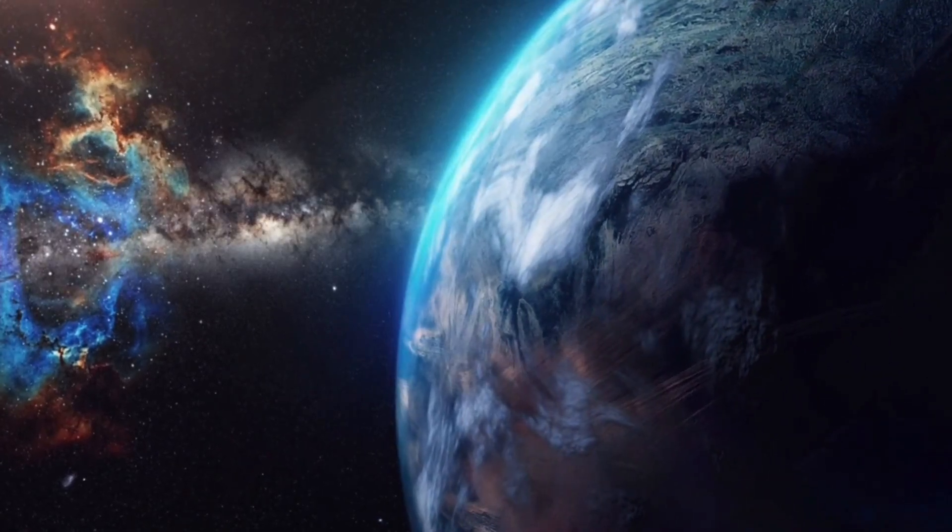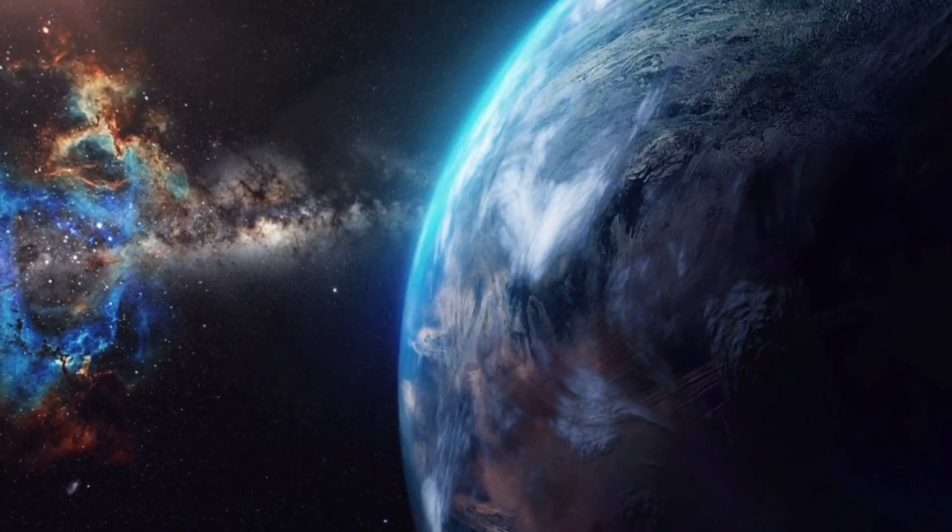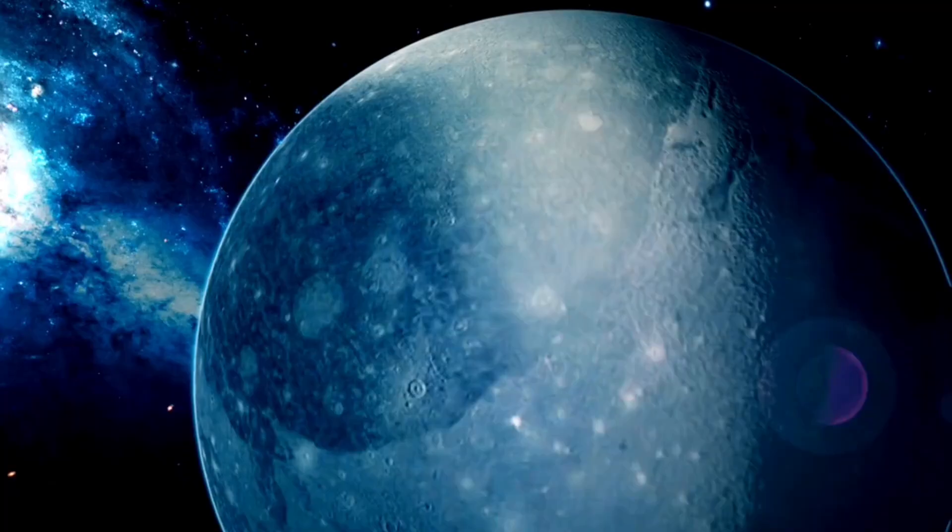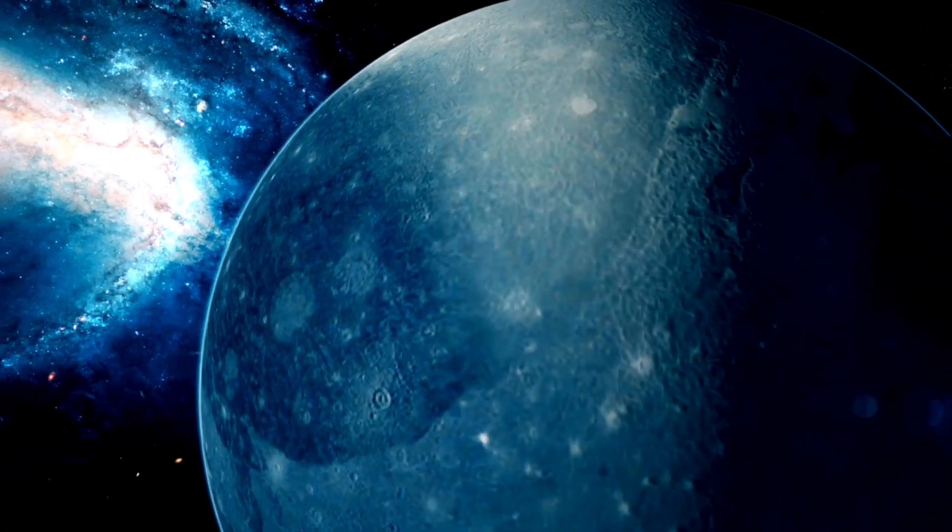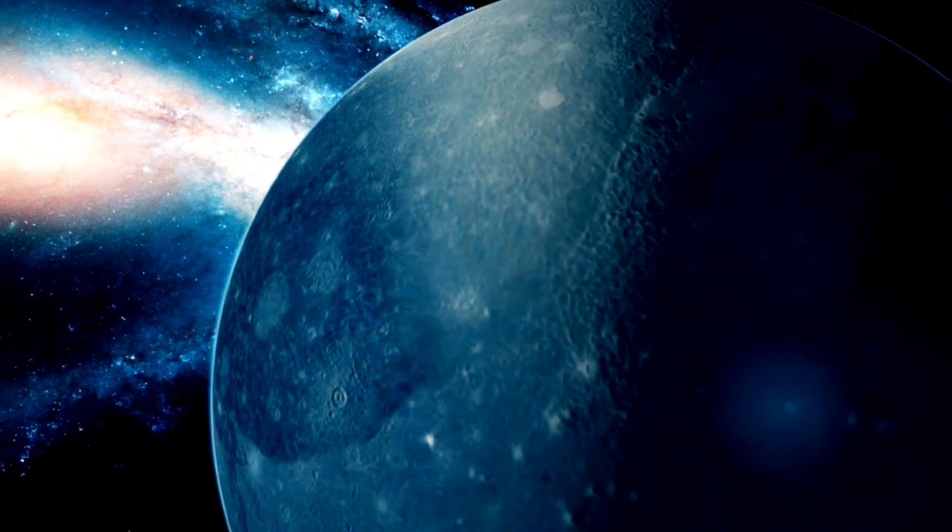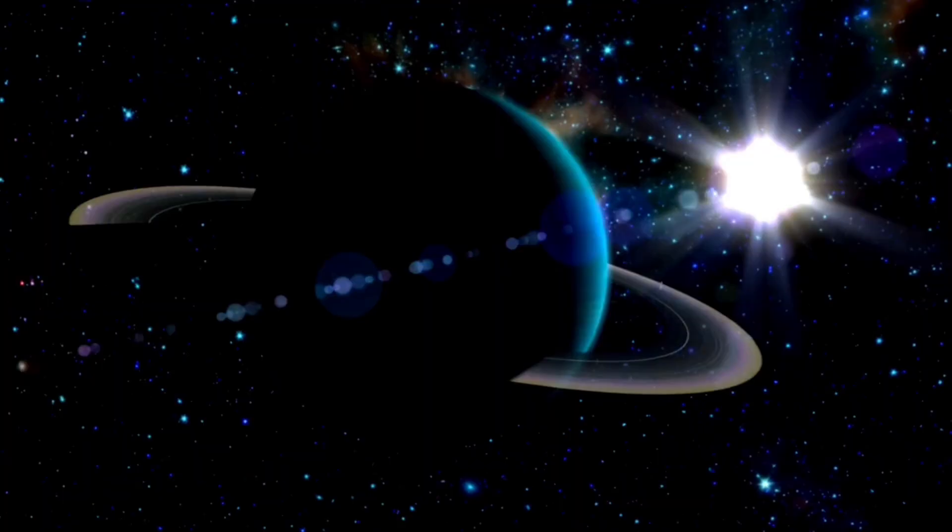For years, Proxima B has hovered just beyond the edge of certainty, a ghostly figure in the cosmic distance, orbiting our nearest stellar neighbor in the faint flickering light of a red dwarf star.